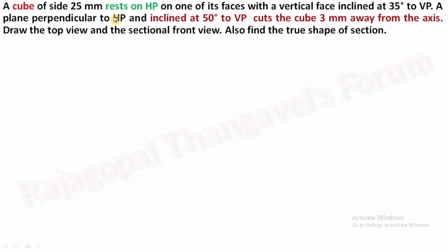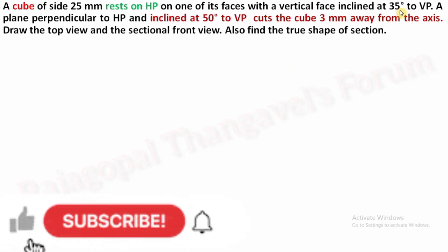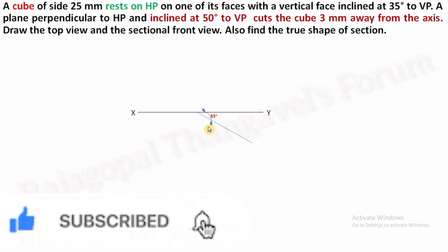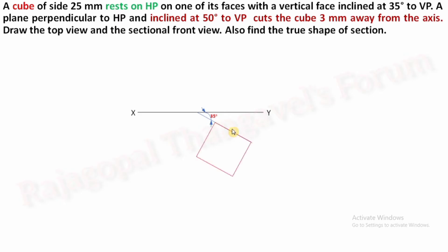First, you have to find what is our top and front view. Being a solid cube that exactly rests on HP, our top view will be a square. The position of the square in the top view is such that one of its faces with a vertical face must be inclined at 35 degrees to VP. Each and every side of the base possesses one vertical face, which means one side of the square makes 35 degrees to VP. So, draw XY and draw a 35 degree inclination thin line, and fix your square side as 25 mm — one side inclined at 35 degrees to XY.